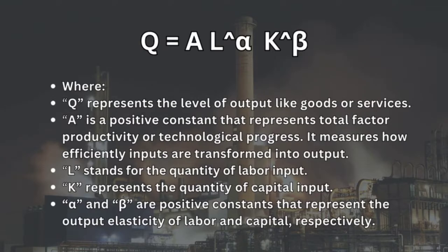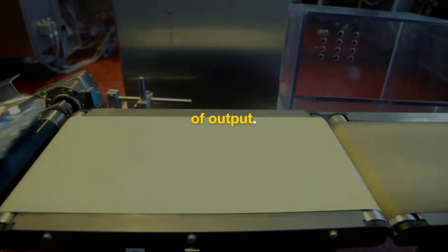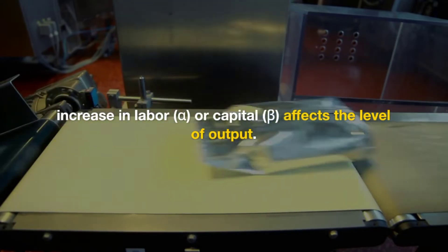Where Q represents the level of output, like goods or services. A is a positive constant that represents total factor productivity or technological progress, measuring how efficiently inputs are transformed into output. L stands for the quantity of labor input, and K represents the quantity of capital input. Alpha and beta are positive constants representing the output elasticity of labor and capital, respectively, indicating how much an increase in labor or capital affects the level of output.